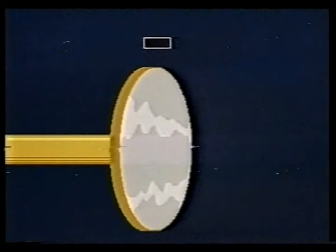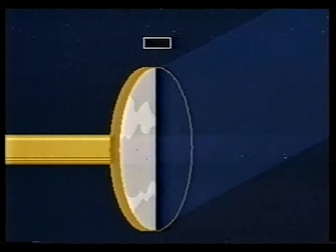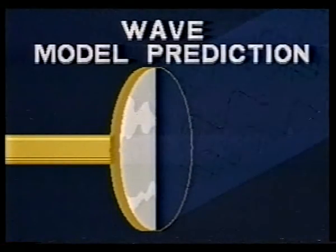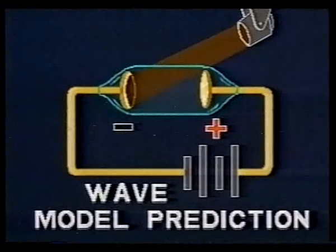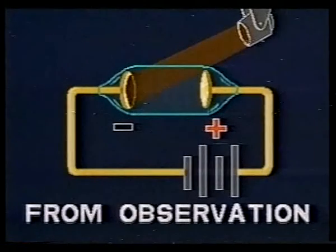Before Einstein, scientists tried to explain and predict this relationship between light and electric current using the electromagnetic wave model. Their prediction: when electromagnetic waves strike atoms, energy is transmitted to the electrons, and some of the electrons escape from the atoms. Since red light did not cause emission of electrons, it should only be necessary to increase the intensity of the red light to transfer more energy to electrons and produce emission. In fact, it fails to happen, no matter how bright the red light is made.